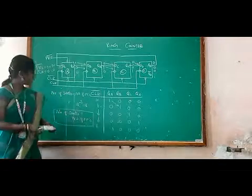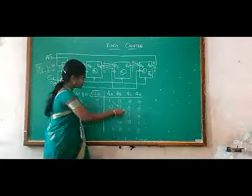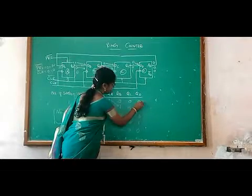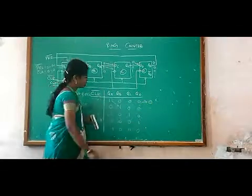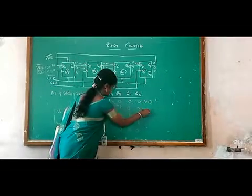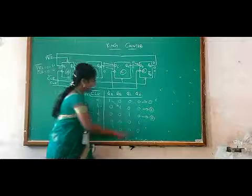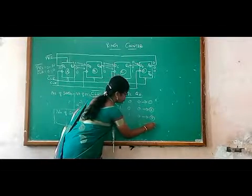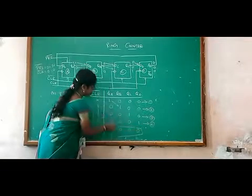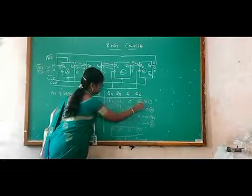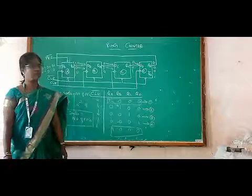As I said, in ring counter the number of states is equal to the number of flip-flops. In the first state, before the clock pulse, the value is 1000 because of the preset condition. The next state the value is 0100. Third state the value is 0010. And the final state is 0001. Again the same 1000 is coming — thus in ring counter the number of states is decided by the number of flip-flops.